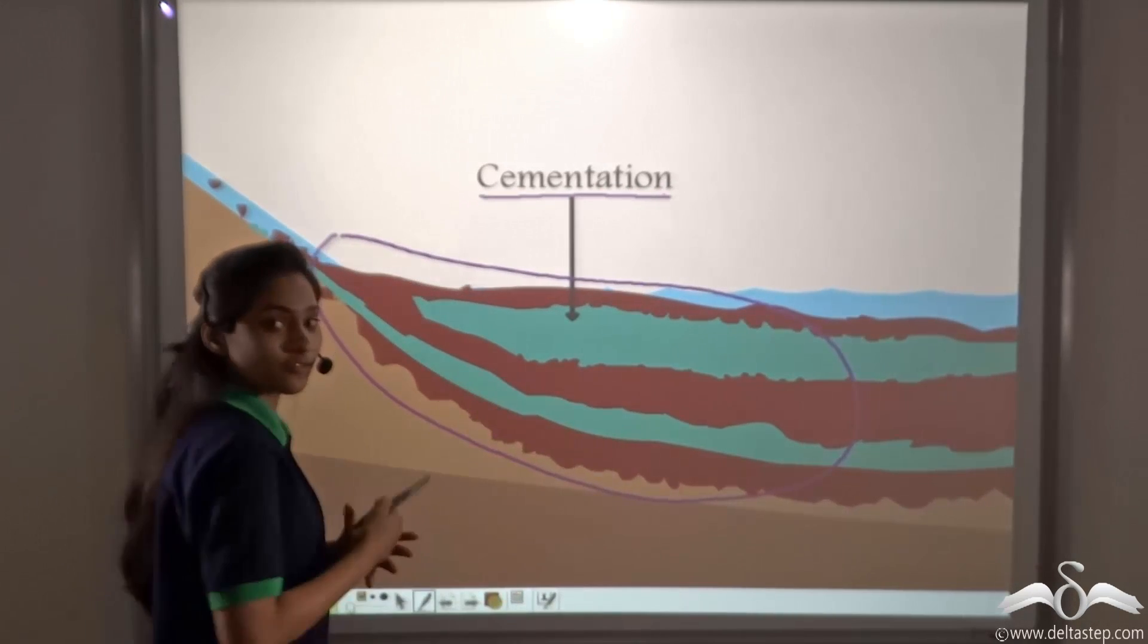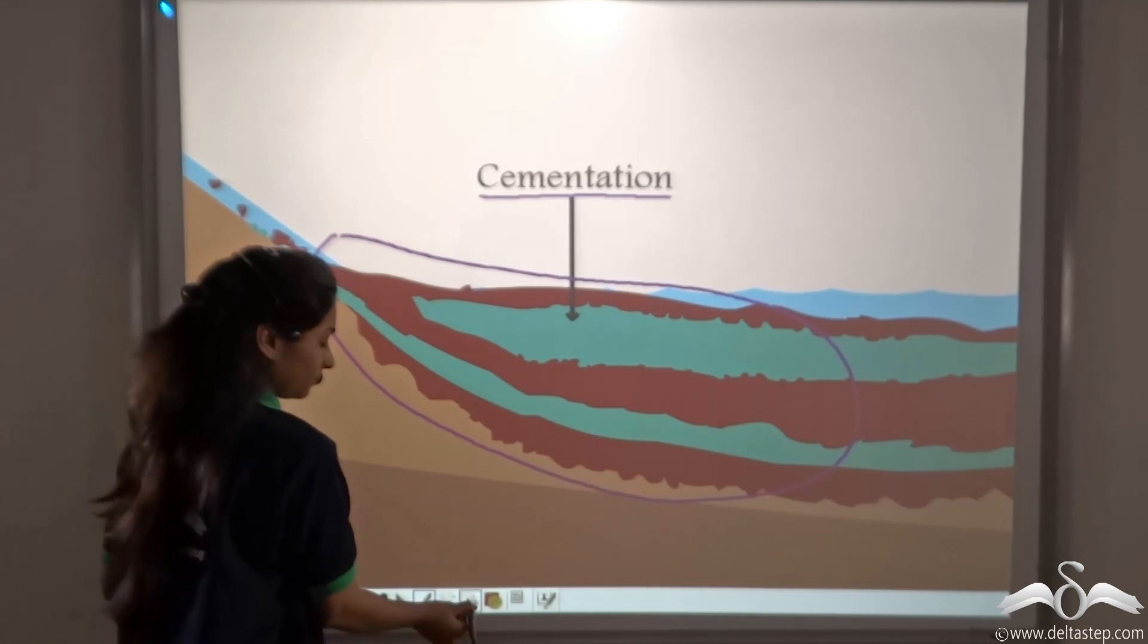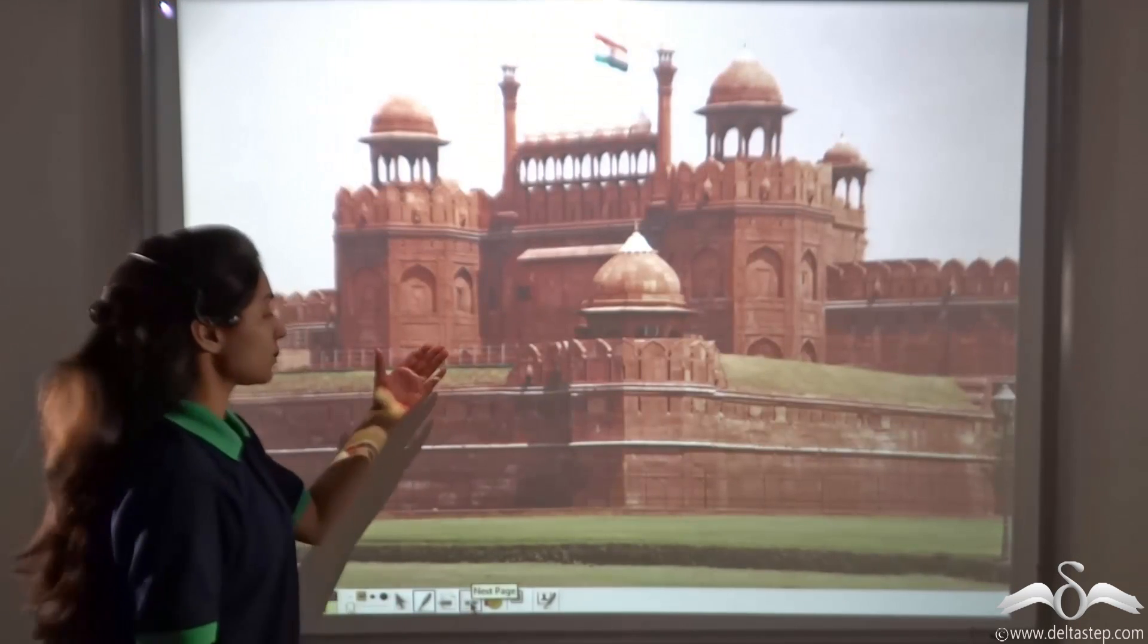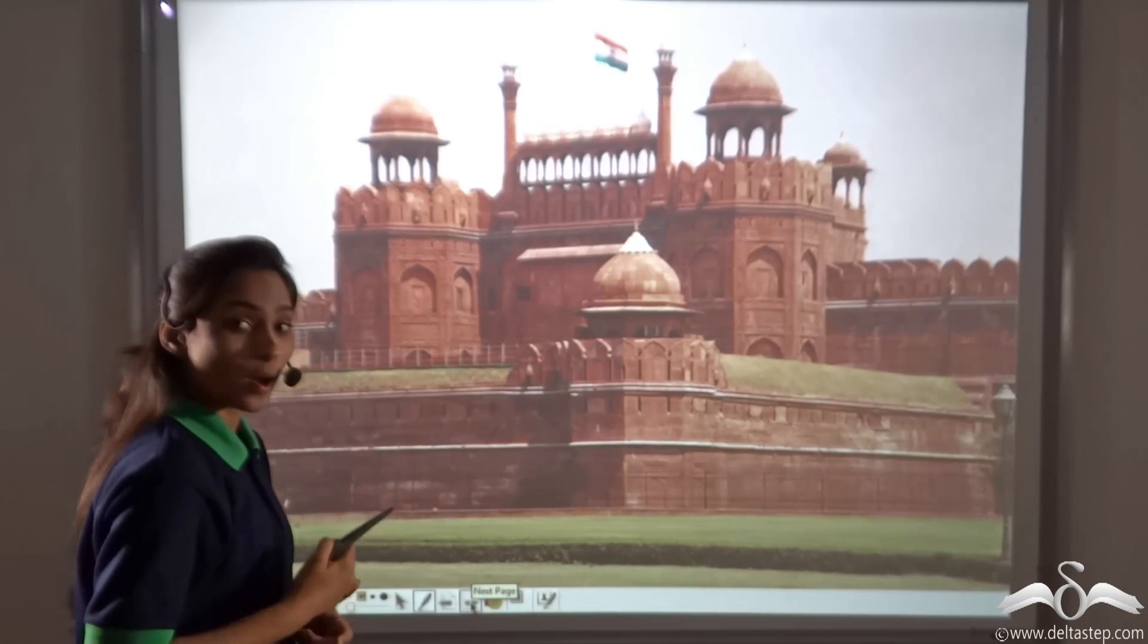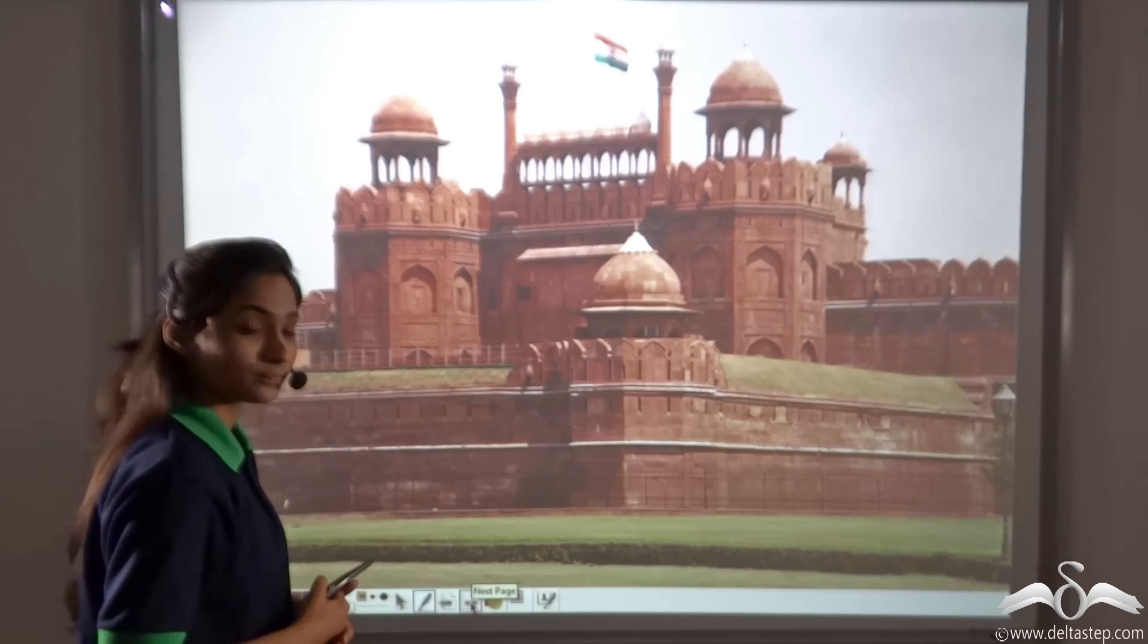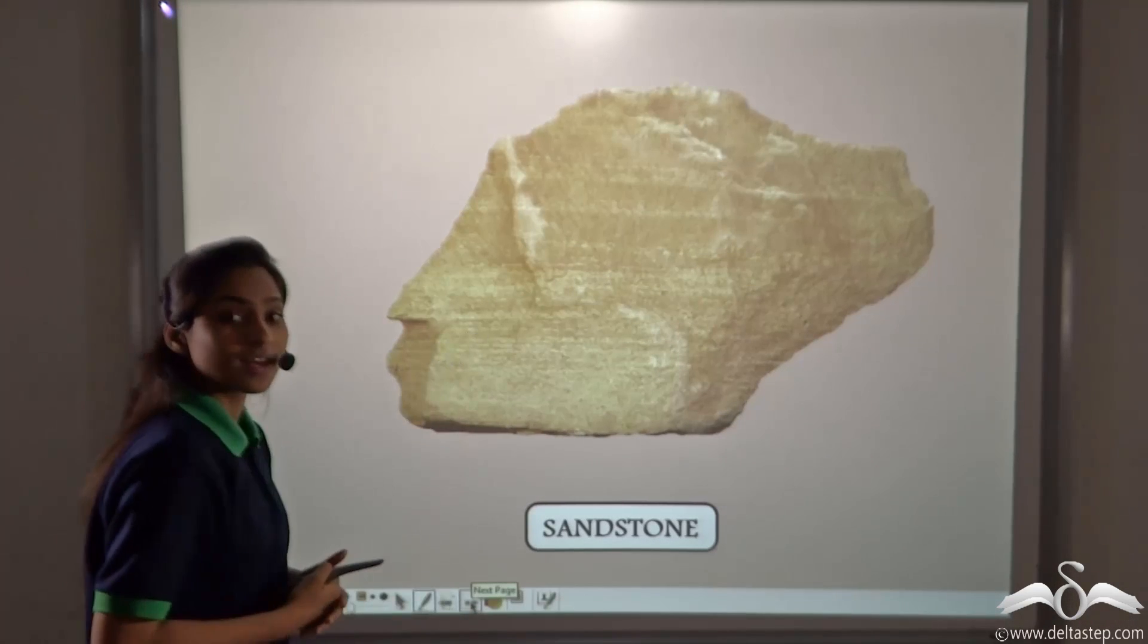These rocks are called sedimentary rocks. This is the picture of the Red Fort in Delhi. Do you know it is made up of one type of sedimentary rock? Yes, it is made up of sandstone.